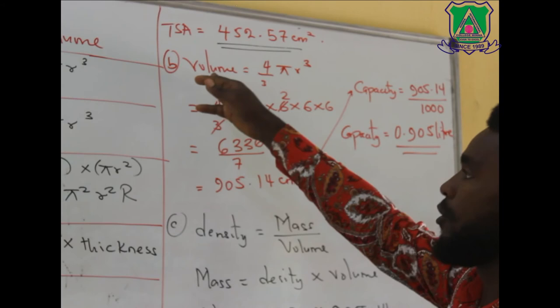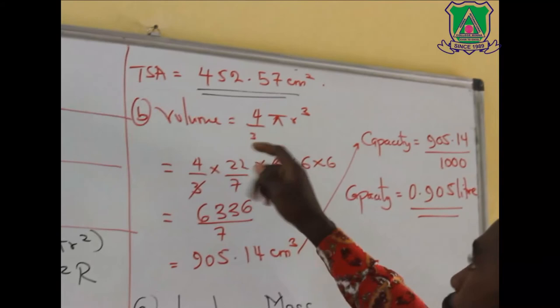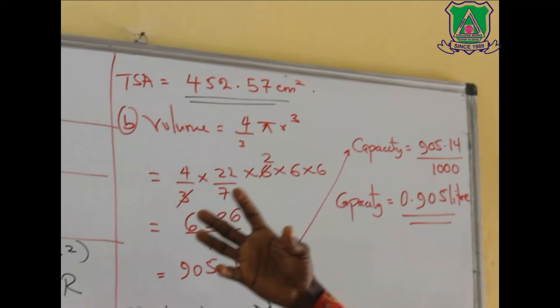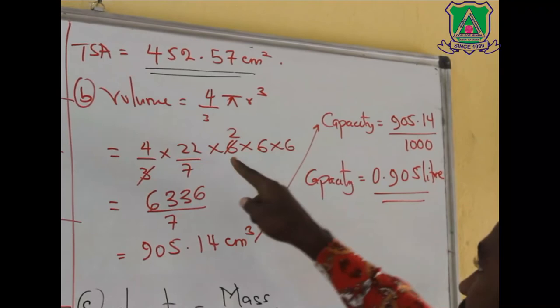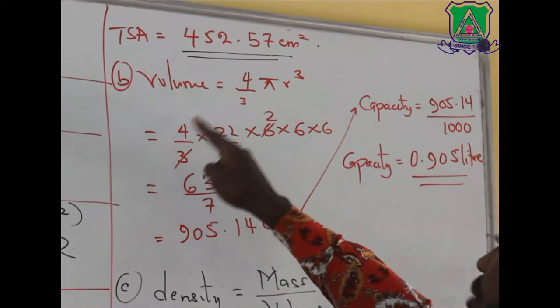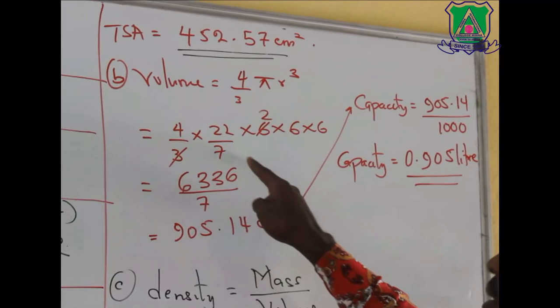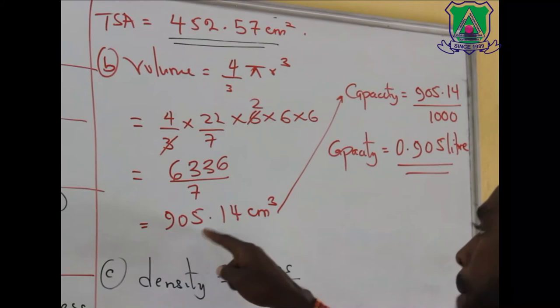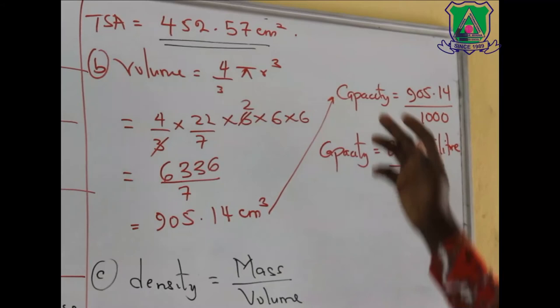Now, we come to the volume. Like I told you, you can't get the capacity without getting the volume. Volume is 4/3 πr³. Remember that? Now, substitution again. 4/3 times 22/7 times r. Now, it's in 3 places. 6 times 6 times 6. This 3 can go here and give me 2. So, 4 times 22 times 2 times 6 times 6 will give me 6,336 all over 7. If you divide, you have 905.14 cm³. Do you understand this?